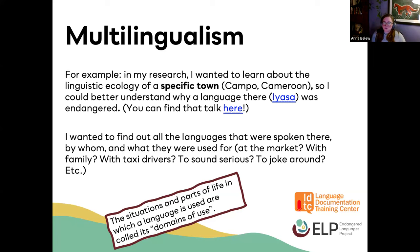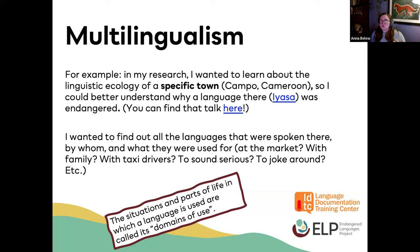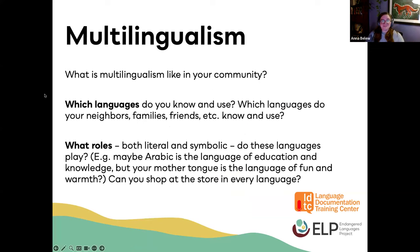The situations and parts of your life in which you use a specific language are called the 'domains of use' for that language — a popular but not totally bulletproof sociolinguistic concept. I'm curious if in your own life and communities you can identify languages used in specific places, situations, or social contexts — like one that's really serious and one that's more informal. Please drop examples in the chat. I'm also curious what multilingualism is like where you are, and how you use your own linguistic repertoire. What roles do those languages play in your life?